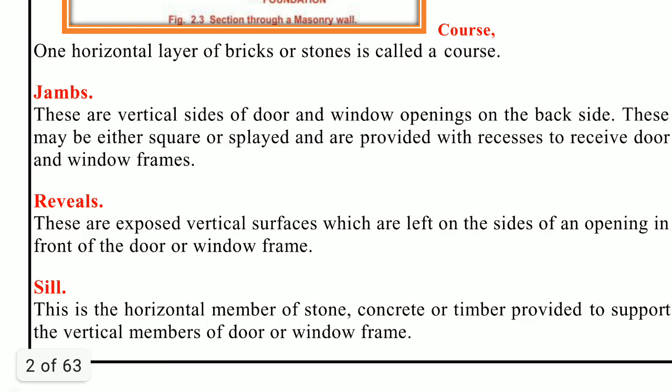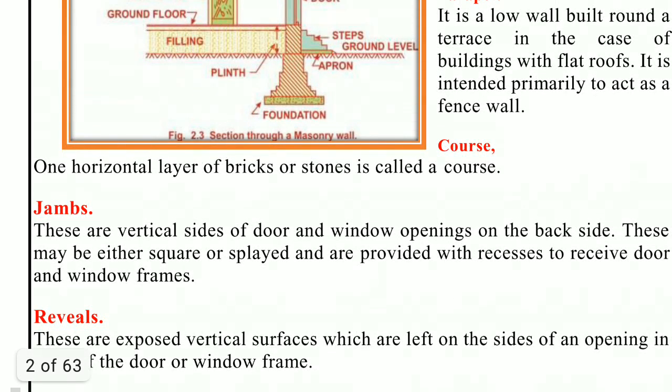Next is a course — C-O-U-R-S-E. A layer of stone or bricks is known as a course. It means a horizontal layer. The thickness is generally equal to the thickness of a stone or a brick plus the thickness of one mortar joint, which is 10 mm.